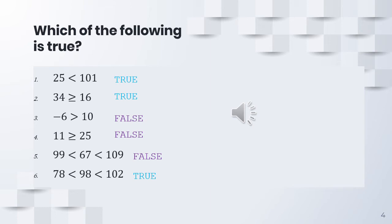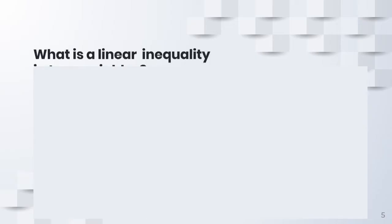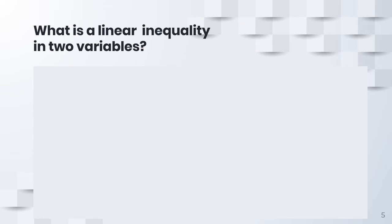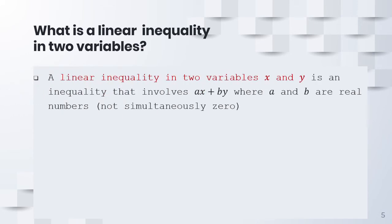Moving on, we discuss linear inequalities in two variables. A linear inequality in two variables x and y is an inequality that involves ax plus by, where a and b are real numbers. Note that a and b cannot be simultaneously zero, so that we will not lose the variables x and y.